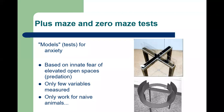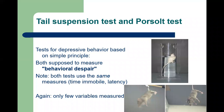Another example: the tail suspension test and forced swim test, both supposed to measure behavioral despair. In both tests, animals are placed in a mildly aversive situation — a glass of water they can't escape, or hanging upside down by their tail. We measure the time animals are immobile, because at some point they give up — showing what we call behavioral despair — and the latency to the first bout of immobility.